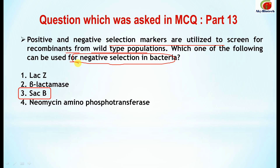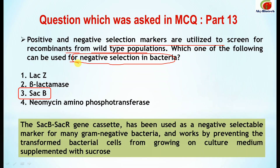Here comes the explanation: the SACB/SACR gene cassette has been used as a negative selectable marker for many gram-negative bacteria. It works by preventing the transformed bacterial cells from growing on cultured media supplemented with sucrose.